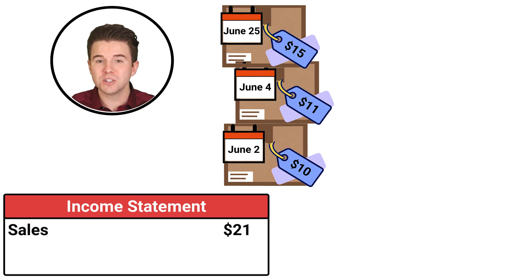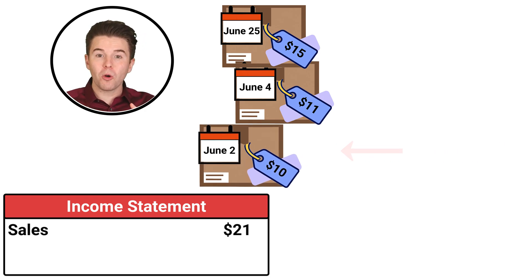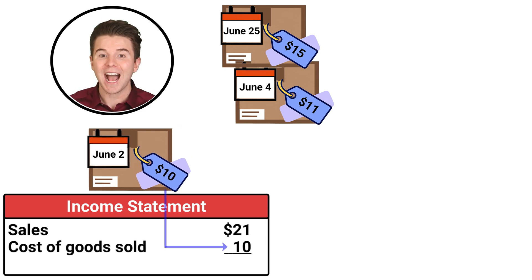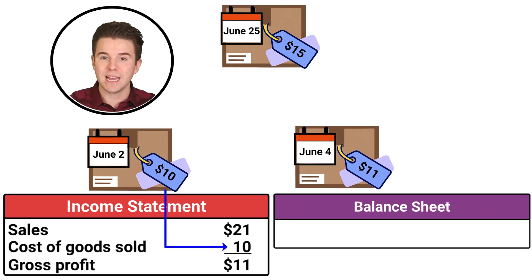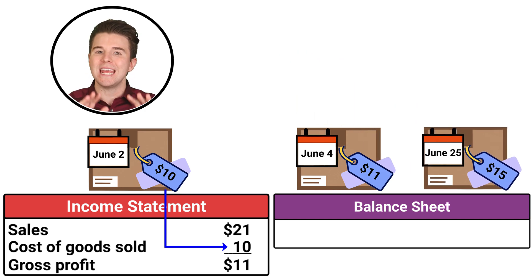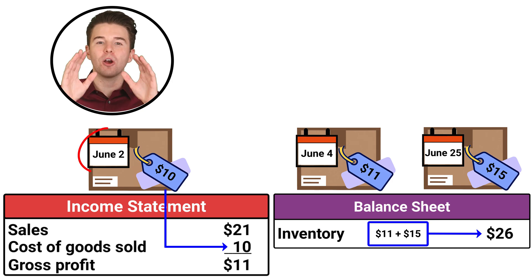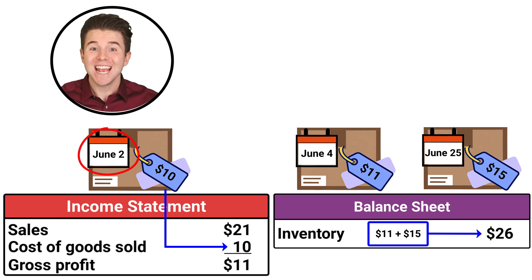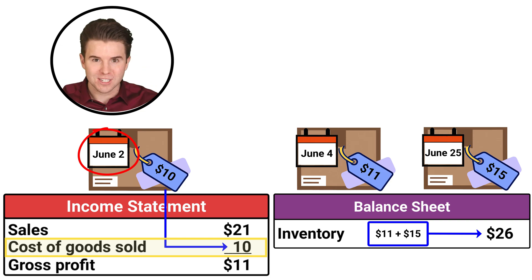Using FIFO, the first unit purchased, which was on June 2nd for $10, is reported as cost of goods sold on the income statement. The other two remaining units for $11 and $15 get reported in inventory on the balance sheet. As you can see, under FIFO, the earliest unit purchased is sent to cost of goods sold on the income statement first.